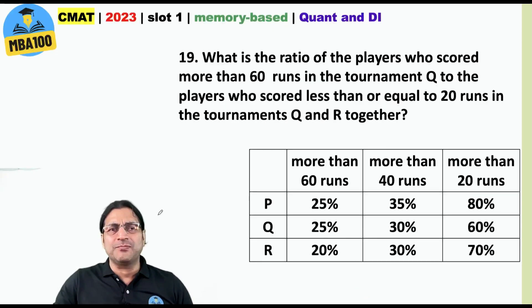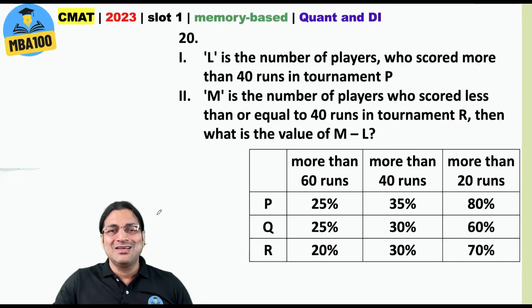The ratio of the players who scored more than 60 runs in the tournament queue to the players who scored less than or equal to 20 runs. The ratio was 5 is to 14. What about this one? What was the value of m minus l? If my memory is serving me right, one of these numbers was 210 and the other one was 105. So the difference was 105.